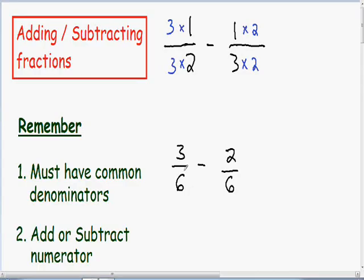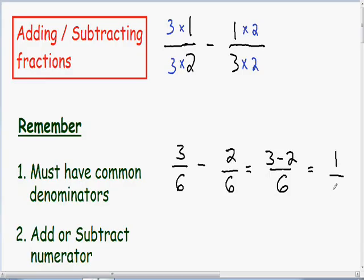Now that we have a common denominator of 6, the bottom numbers are both the same, and we can subtract these fractions quite easily. Our denominator always stays the same, so we have a denominator of 6. In our numerator, we subtract 3 minus 2, which gives us 1 over 6.